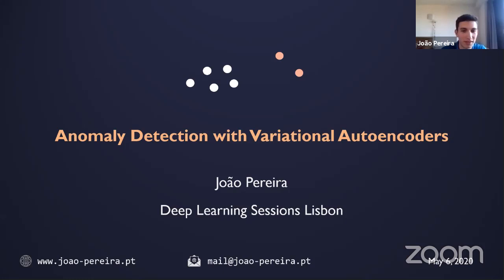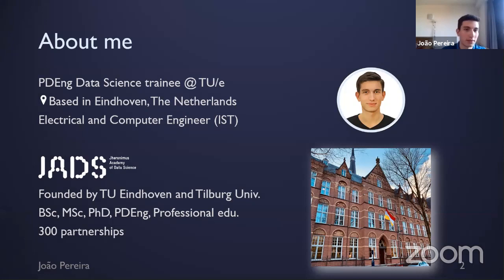Good afternoon everyone, and thanks for joining this event and also to the organizers for the invitation and for setting up this online meeting. Today I'm going to talk about anomaly detection and how we can do anomaly detection using a special class of deep learning models called variational autoencoders. My objective is that by the end of the presentation you will be convinced that these models are flexible enough to be applied in a wide variety of scenarios.